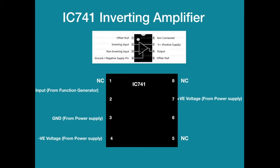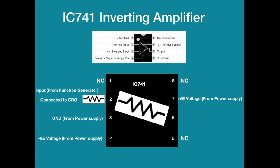The input is given to pin number two that is the inverting input through a resistor. The same input is connected to CRO to observe the input waveform and adjust its frequency and amplitude. A feedback resistance RF is connected between pin number two and pin number six. The output is obtained at pin number six which is connected to CRO, so that both the input and output waveforms can be obtained and compared.